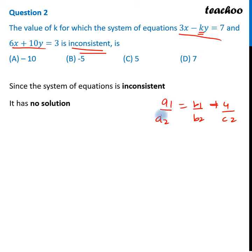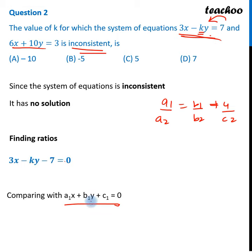So first, let's take a1, a2, b1, b2, c1, c2 values. So our first system is this. The standard form of equation is this. We will take this 7 here. So 3x minus ky minus 7 equals 0. Now this is the standard form.